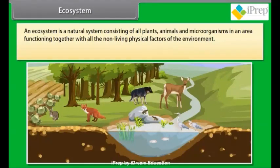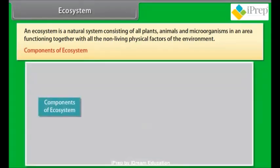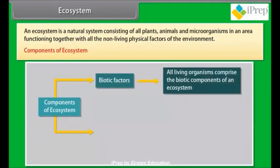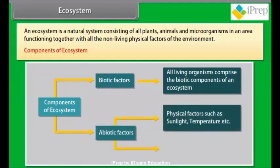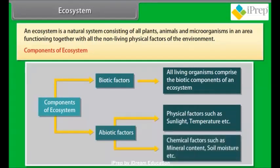An ecosystem is a natural system consisting of all plants, animals, and microorganisms in an area functioning together with all the non-living physical factors of the environment. Ecosystem comprises two components: one, biotic factors — including all living organisms; and two, abiotic factors — including physical factors such as sunlight and temperature, and chemical factors such as mineral content, soil moisture, etc.